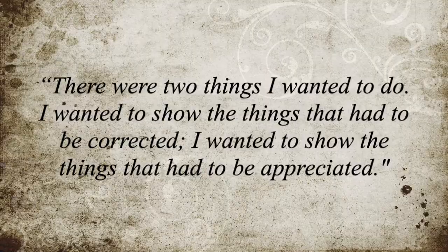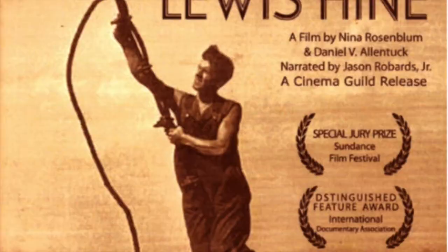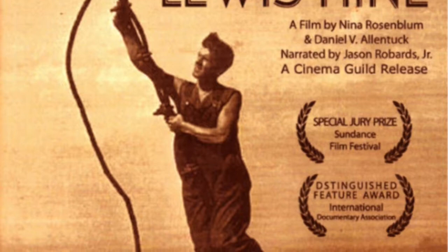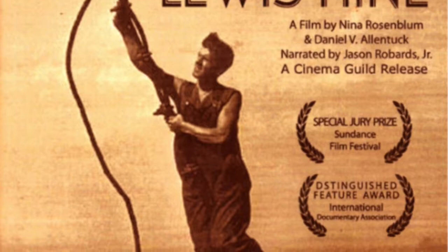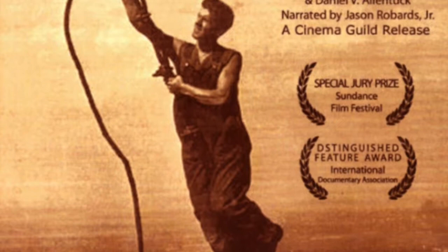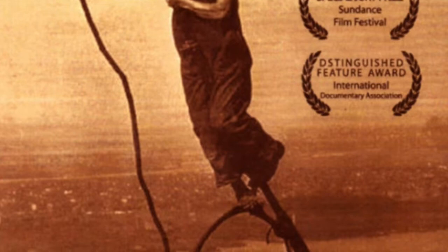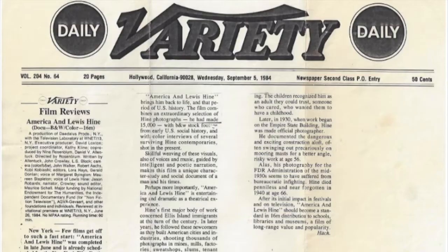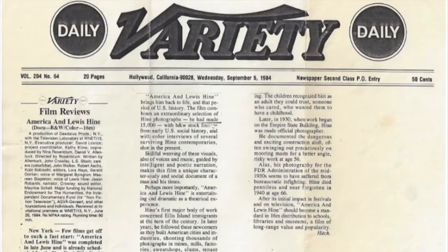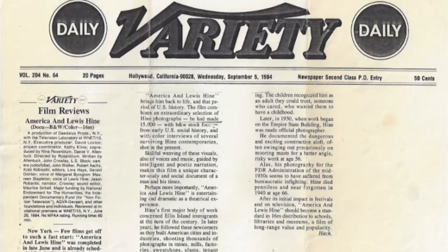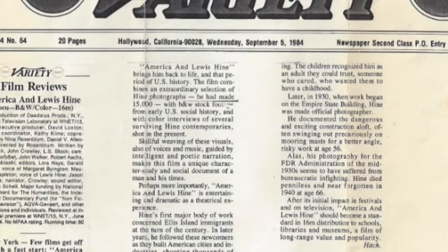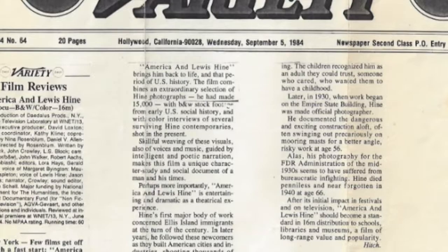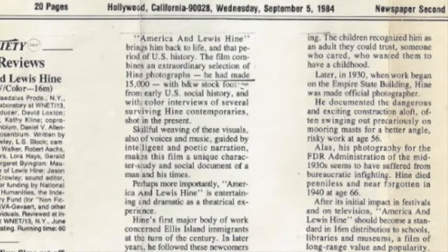In 1984, a movie was made about the life and work of Lewis Hine called America and Lewis Hine. Granted the Special Jury Prize and Distinguished Feature Awards, the film was advertised to be a moving portrait of one of America's greatest photographers. America and Lewis Hine recognized that Hine's work helped establish child labor legislation and is an important part of our national heritage. A film review published in Daily Variety acclaimed that the film brings him back to life in that period of U.S. history, combining an extraordinary selection of Hine's photographs with black and white stock footage from early U.S. social history — skillfully weaving visuals, voices, and music, guided by intelligent and poetic narration — making it a unique character study and social document of a man and his times.